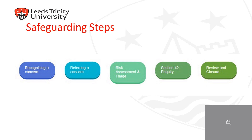Safeguarding steps. The steps followed to safeguard adults are: first, recognising a concern — this could be a change in behaviour or noticing visible signs that one is being abused, harmed, or neglected. The next step is referring a concern to a designated member of staff. This is then followed by a risk assessment and triage and a Section 42 inquiry, eventually concluding with a review and closure of the case.